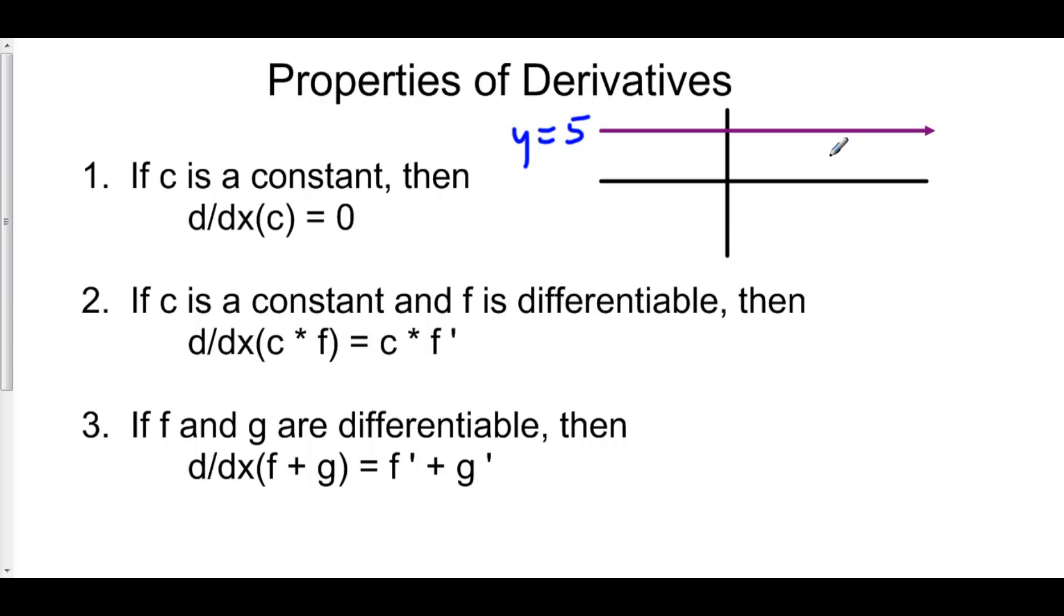Number two says that if c is a constant and f is a differentiable function, then the derivative of c times f is c times the derivative of f.